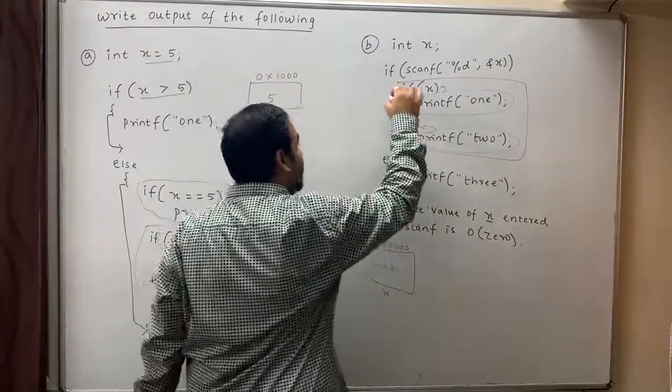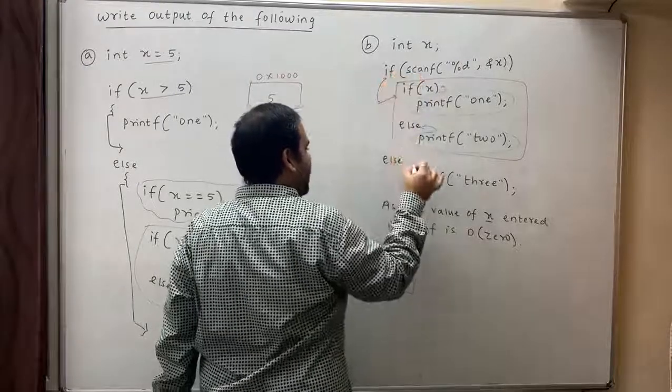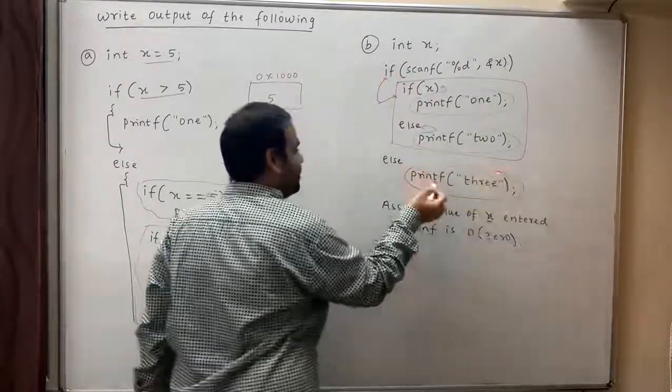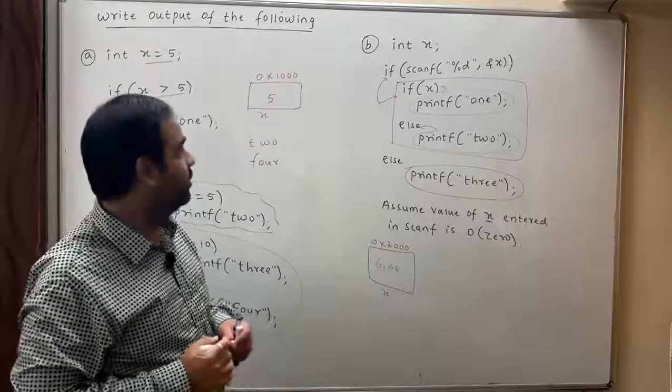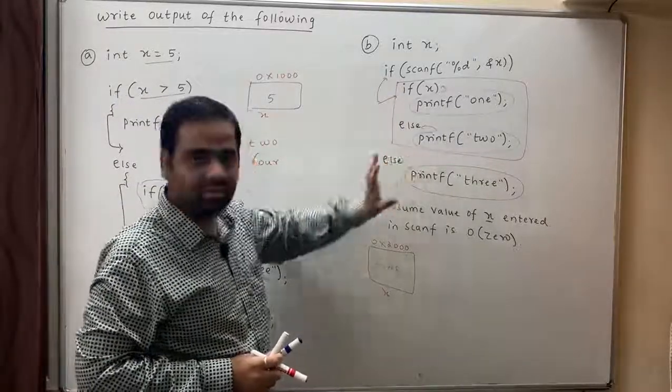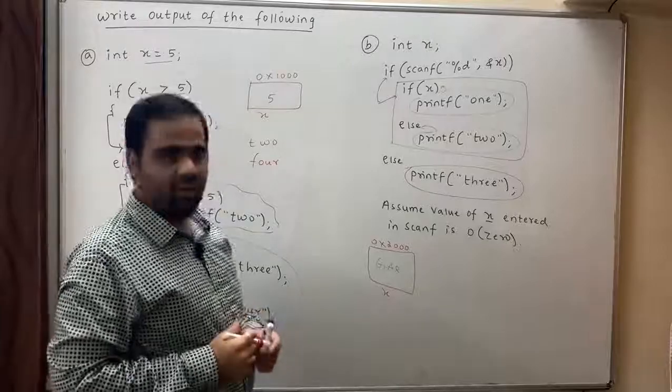This complete thing is the body of this if and this is the body of the else. This complete thing is the body of if and this is the body of else.